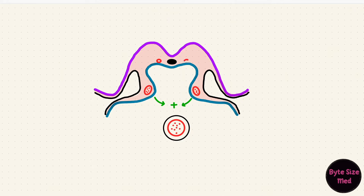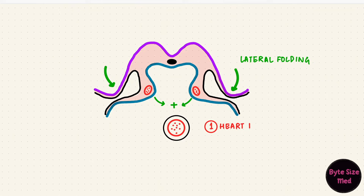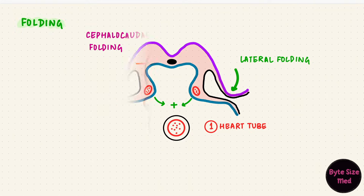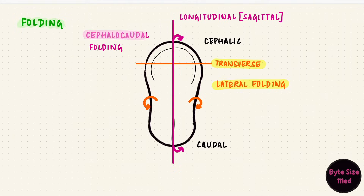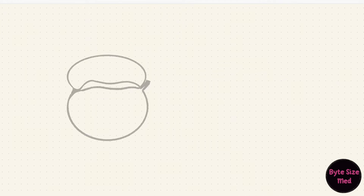In a section like this you'll also see the dorsal aorta, which continues from the heart tube — but ignore those for now. So lateral folding results in a single heart tube. The embryo also folds cephalocaudally, and for that we use a sagittal section, which would look something like this.